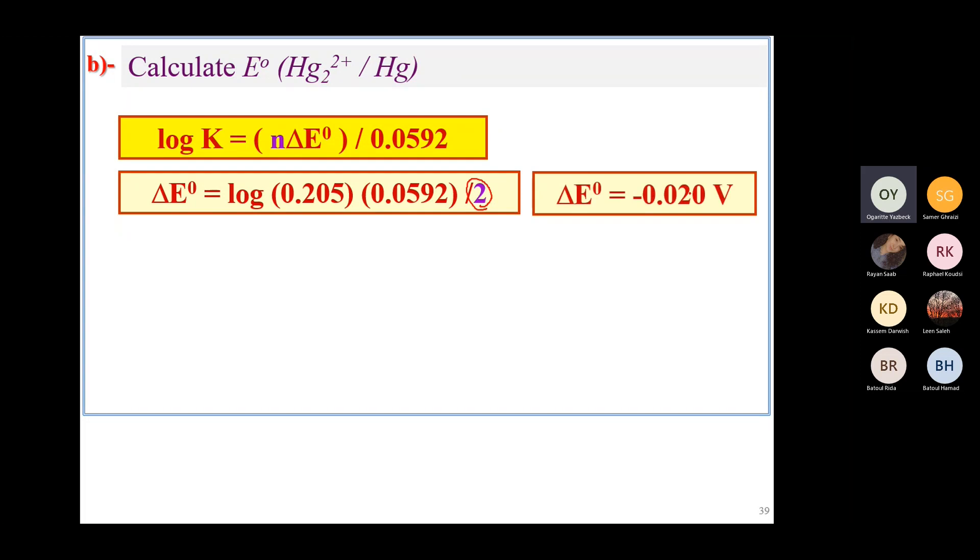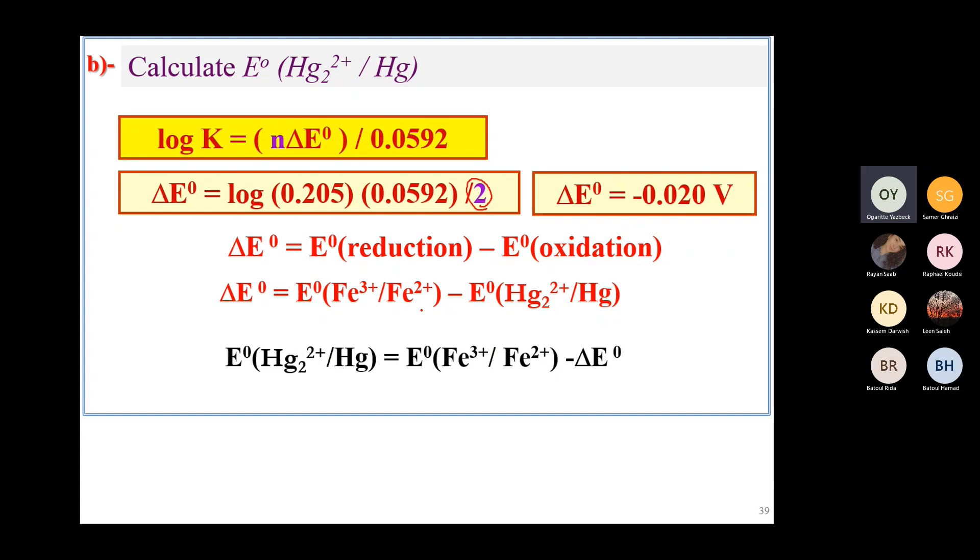So if you get delta E° is minus 0.20. And so E° reduction minus E° oxidation. So we want to find the E° of the mercury. We found the E° from the K. Delta E° from the K. Delta E° is E° reduction minus E° oxidation. The reduction is the iron. Oxidation is the mercury as we just saw by the charge transfer. And we solve for the E°. And we solve now for the E° of mercury. We get it's 0.771 V.